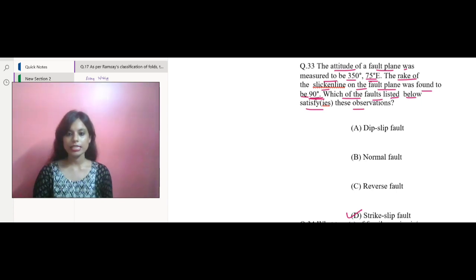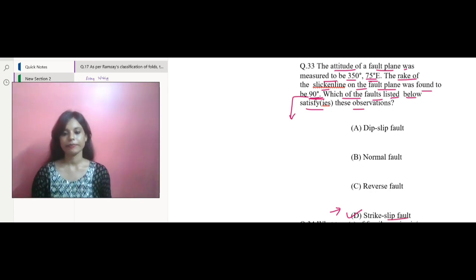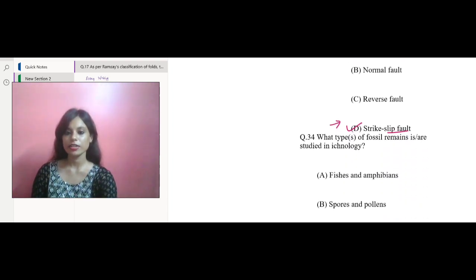90 degrees means it's kind of perpendicular to the strike of the fault plane. And this implies that the fault is a strike-slip fault, the one that we have chosen as our correct answer. Therefore, we are going with this option only.